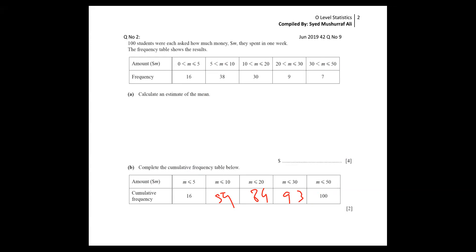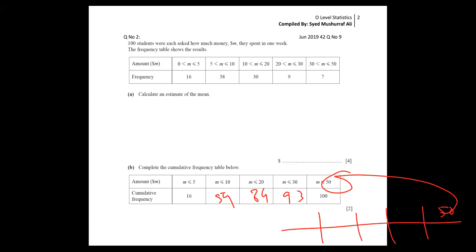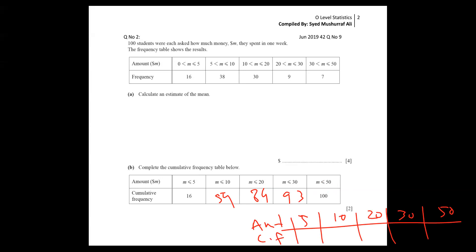So this table — Banan, I'm copying it here because I need it on the next page. I'm noting: 50. I had numbers only — 30, 20, 10, and 5. These are amounts. And below is CF — CF stands for cumulative frequency. Values: 16, 54.